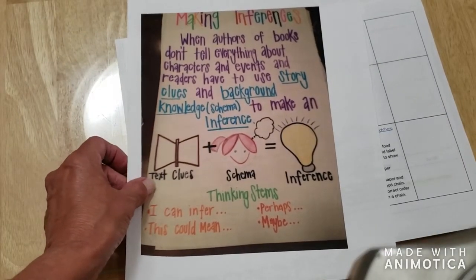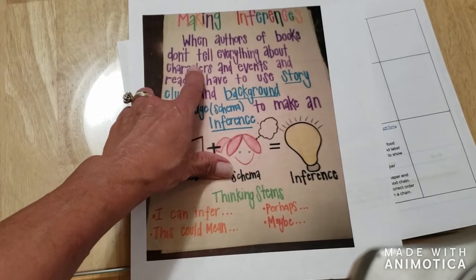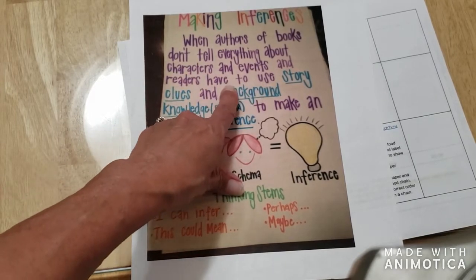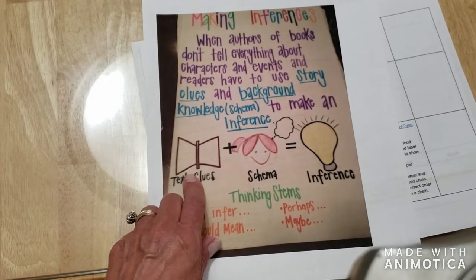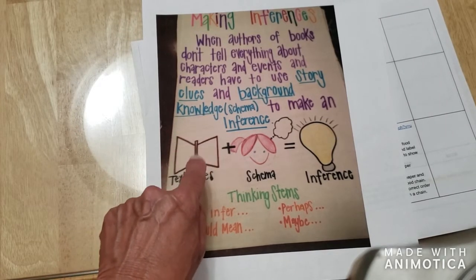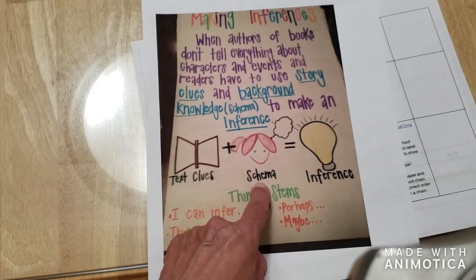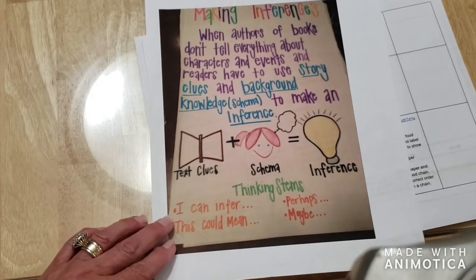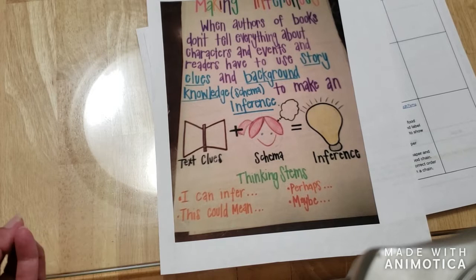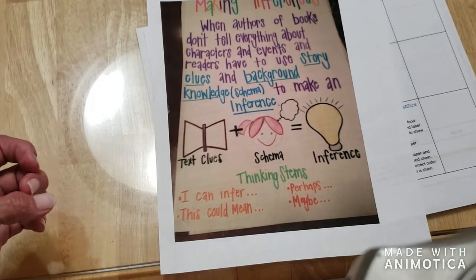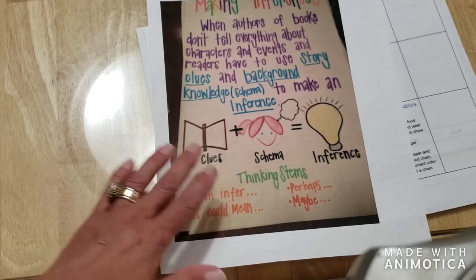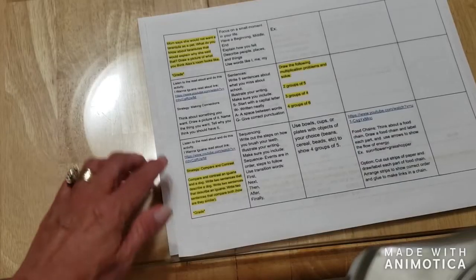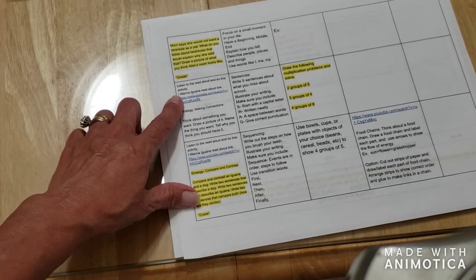To refresh our memory on making inferences: this is when authors don't tell everything about characters and events, and readers have to use story clues and background knowledge — called schema — to make an inference. Text clues from the book plus what you already know equals an inference. Your thinking stems would be: 'I can infer this,' 'this could mean,' or 'perhaps maybe.' Remember, it's not something stated directly — it's something the author is trying to tell you without putting it directly into the story.